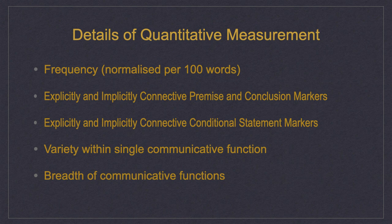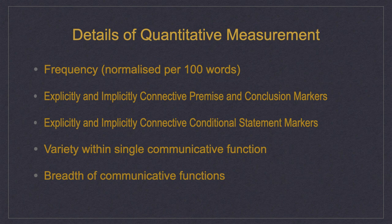Details for quantitative measurement included the following metrics: the frequency of metadiscourse marker usage normalized per 100 words; the count of explicitly and implicitly connective premise and conclusion markers; also the same for conditional statement markers; and the variety of unique uses of metadiscourse markers within a single communicative function. I also accounted for the breadth of different communicative functions used in students' writing.